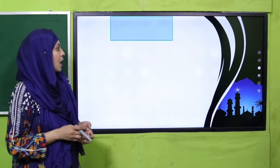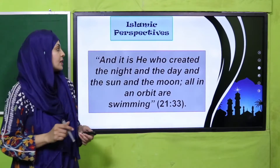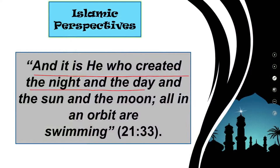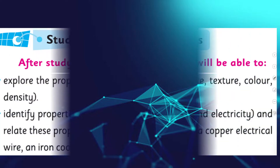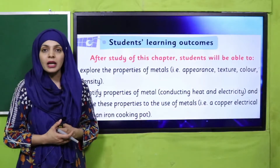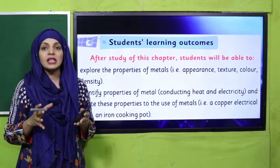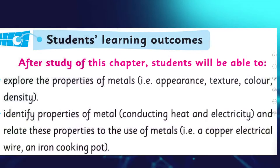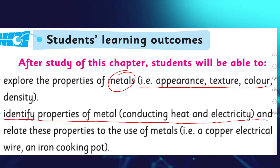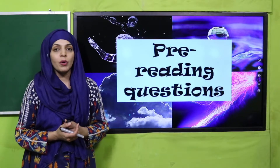Why do some materials sink? Because they are more dense; the particles are very tightly packed with no air between them, so they sink in water. Now the Islamic perspective: 'It is He who created the night and the day, and the sun and the moon — all in an orbit are swimming.' Today's student learning outcomes: students will explore properties of metals — appearance, texture, color, and density — and identify properties like conducting heat and electricity, relating these to uses such as copper in electrical wire and iron in a cooking pot.